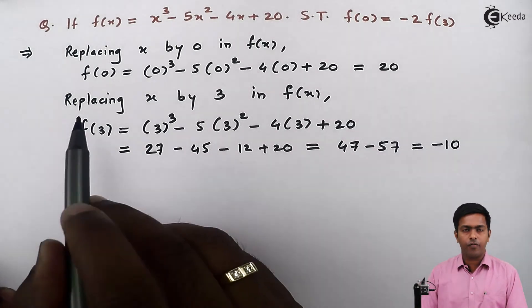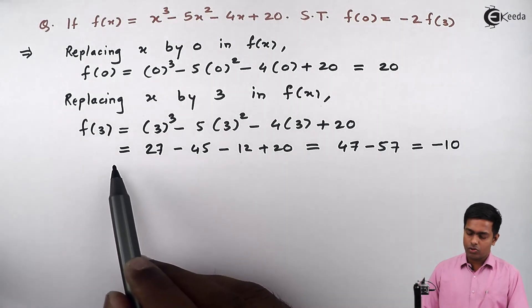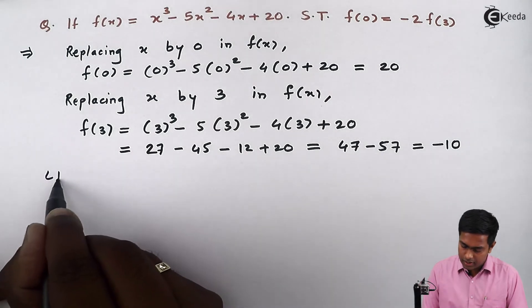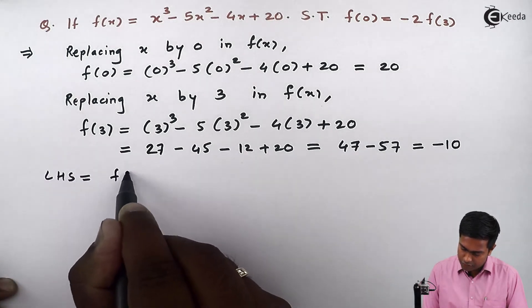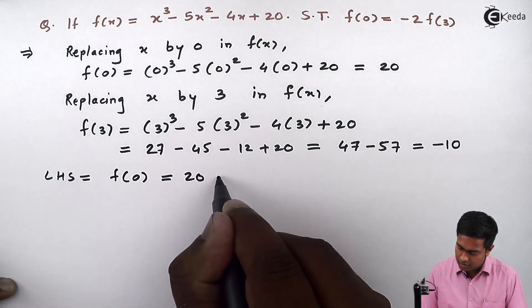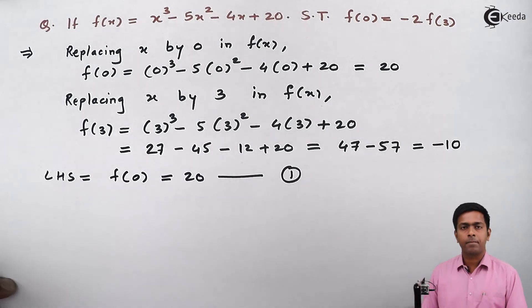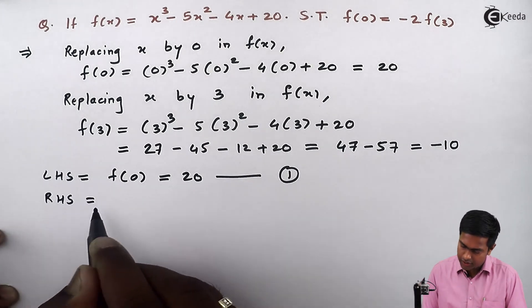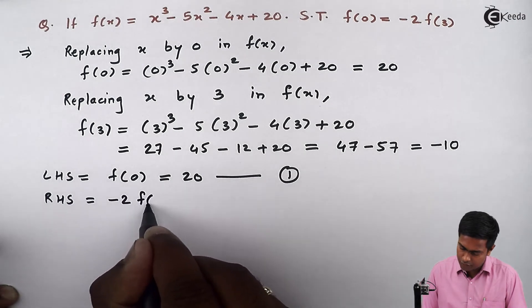Now we got the value of f(0) and f(3). So let's show the result which is asked. So LHS is f(0) which is 20. So that is our equation number 1.